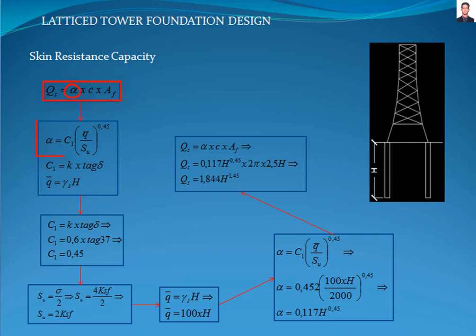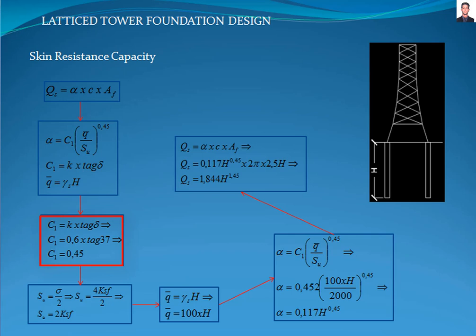Now we proceed to calculate the skin resistance capacity with this equation, where alpha is the adhesion factor calculated with this equation. C_1 is calculated with this equation and is a factor that depends on the lateral earth pressure coefficient K, which depends on the method of pile installation, and is taken between 0.5 and 0.6 for bored piles. Delta is the effective friction angle, which for this case is 37 degrees. Q is the effective overburden pressure, calculated with this equation where gamma_s is the specific weight of the soil, H is the height of the pile, S_u is the undrained shear strength, and A_f is the area of the pile skin. Resolving C_1 results in 0.45.